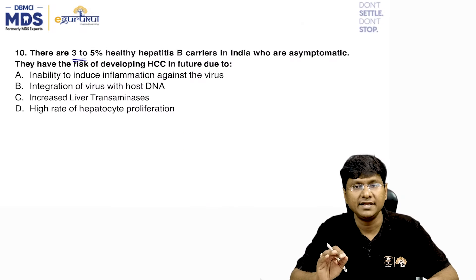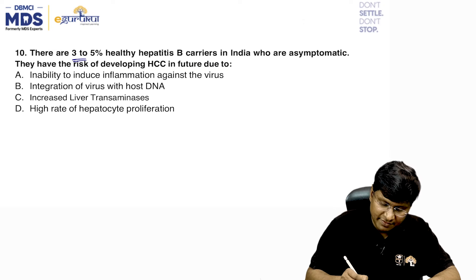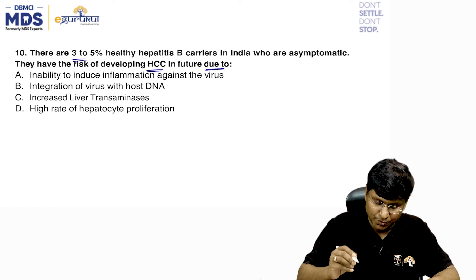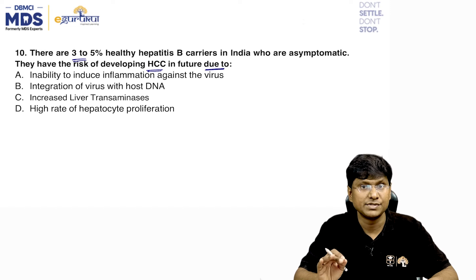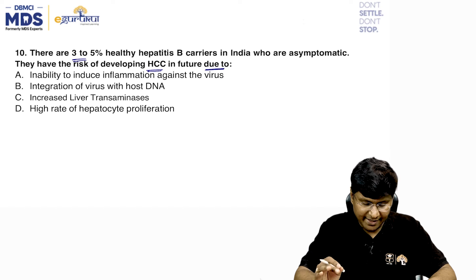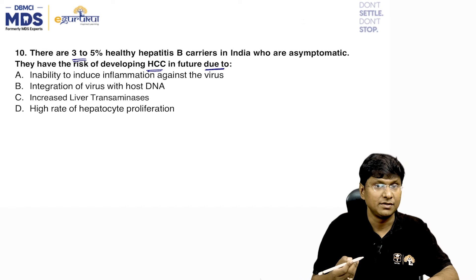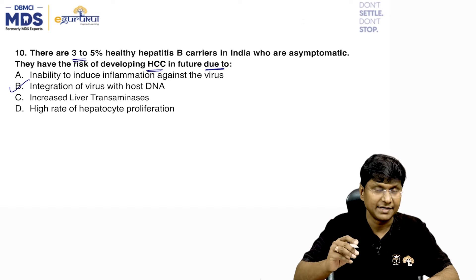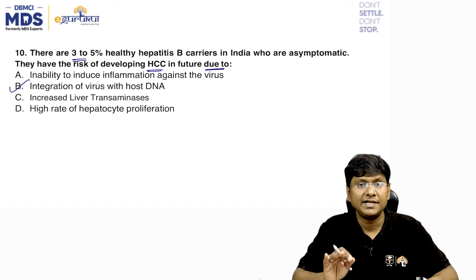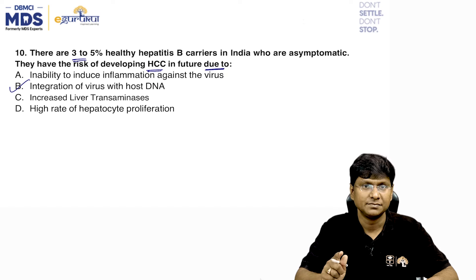Next question: there are 3–5% healthy hepatitis B carriers in India who are asymptomatic but have a risk of developing hepatocellular carcinoma. The reason is integration of the virus with the host DNA. Integration of hepatitis B virus DNA is seen in more than 90% of hepatitis B-related hepatocellular carcinoma.